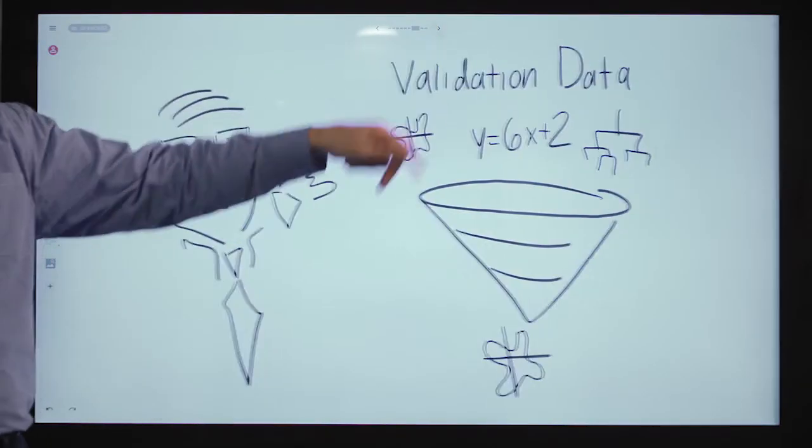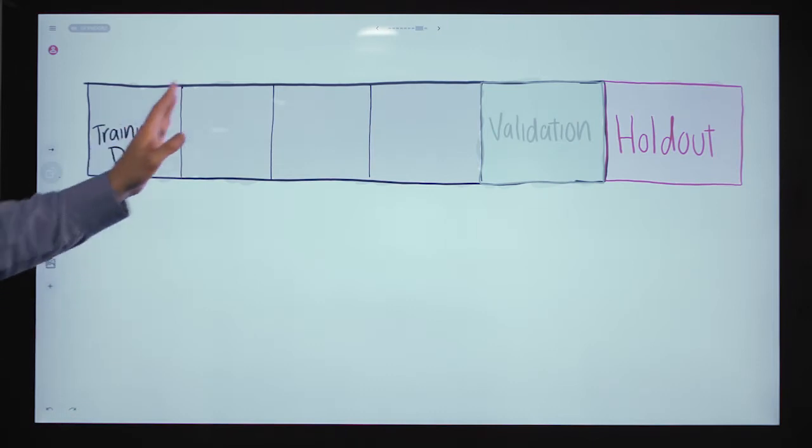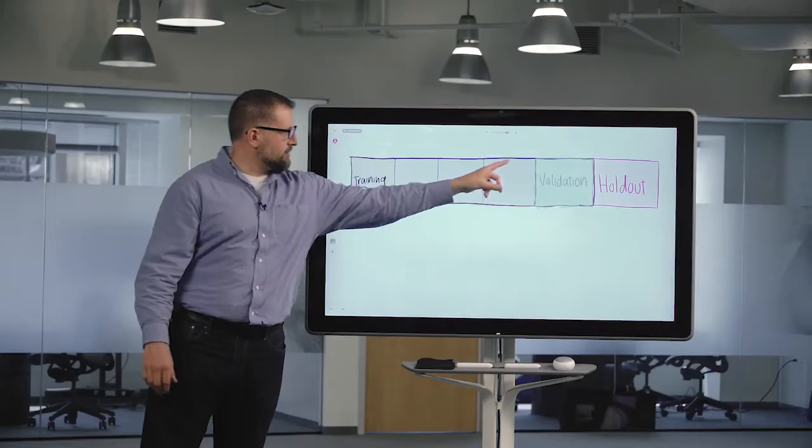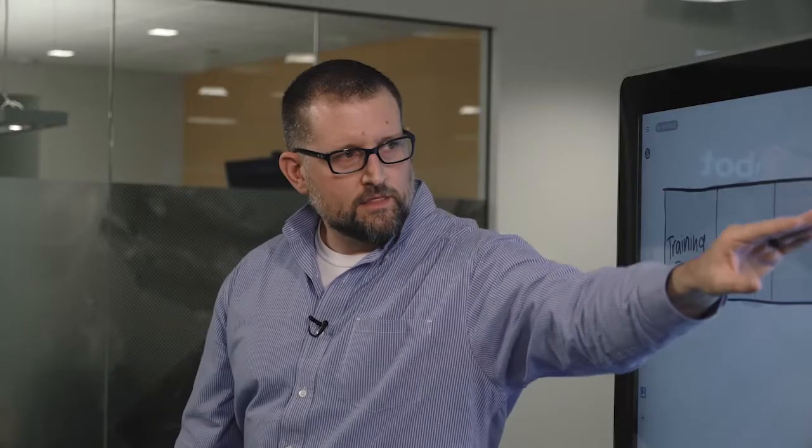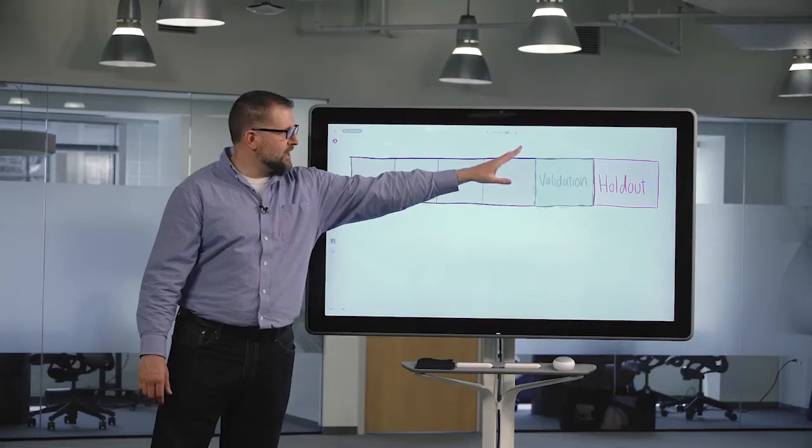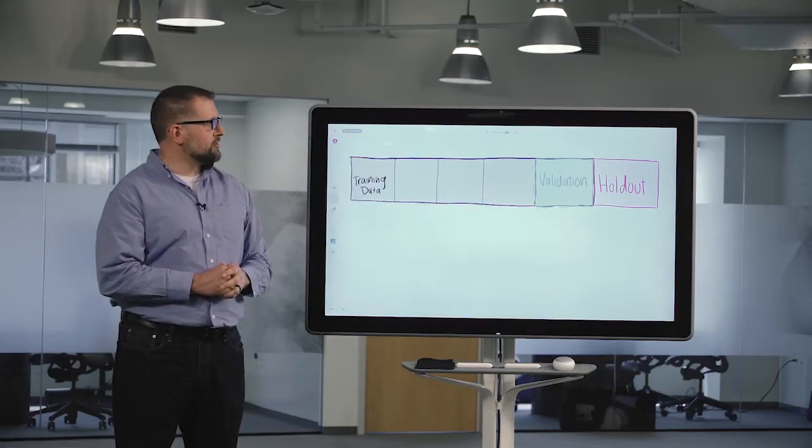So the solution to this is pretty simple. What we do is we take our entire data set and we break it up into three pieces: the training partition here in gray, the validation partition in green, and the holdout partition in red.